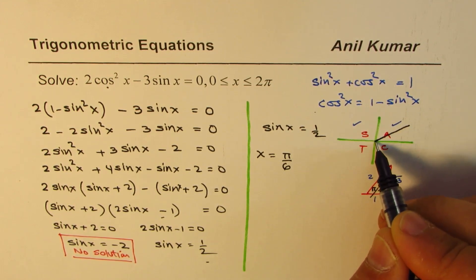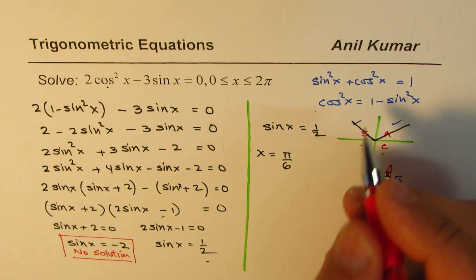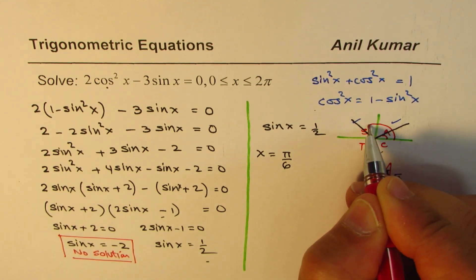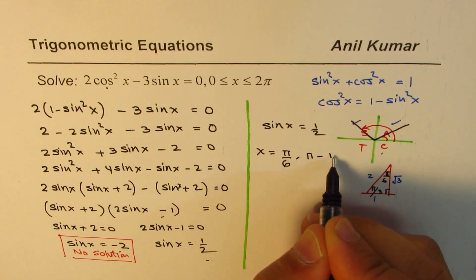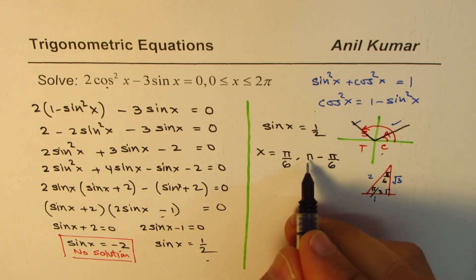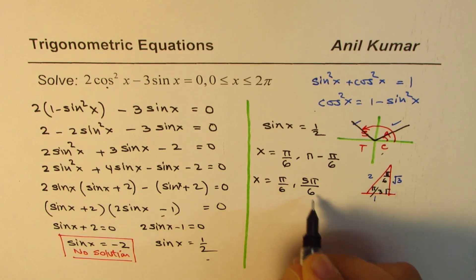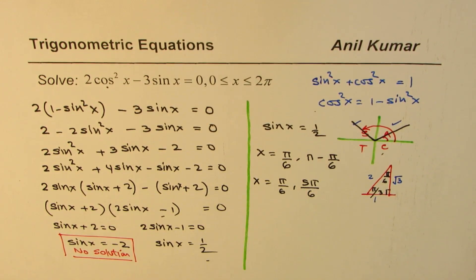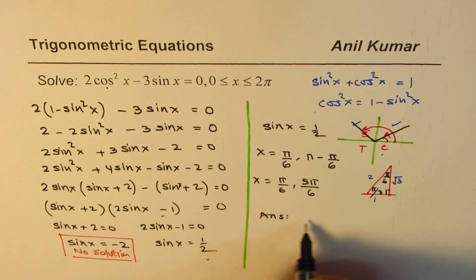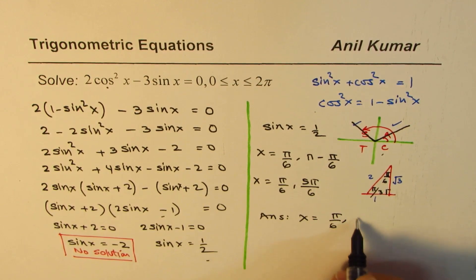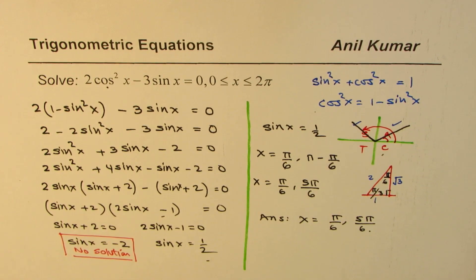That gives only one solution in quadrant 1. The other solution has to be in quadrant 2. The other angle is π minus π/6, which equals 5π/6. So x equals π/6 and 5π/6. In this particular case we get two solutions, and when written in this form they are exact solutions. So we can write the answer as x equals π/6 and 5π/6.